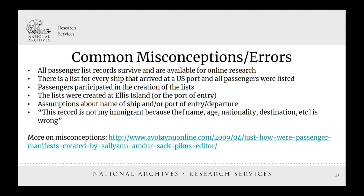There are a number of common misconceptions and research errors to avoid. It is false that all passenger list records survive and are available for online research — unfortunately, for any number of reasons like water, fire, etc., not every record survives. It is also false that there is a list for every ship that arrived at a U.S. port and that all passengers were listed — in some cases only the first cabin passengers are listed, or the list may be clearly incomplete because it only records a handful of names for a vessel that obviously carried hundreds of passengers. It is false that passengers participated in the creation of the list, and it is false that the lists were created at Ellis Island or the port of entry. Lists of individuals purchasing tickets were kept by the ticket brokers, and these lists were submitted at the port of departure where the captain created the vessel's passenger list. This also means that any change in name did not occur at Ellis Island, but rather at the point of ticket purchase.